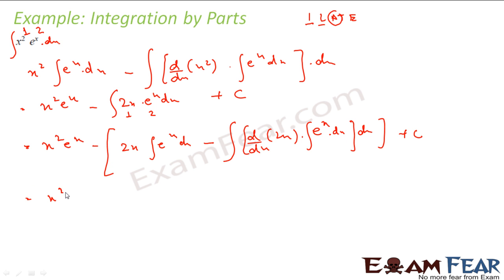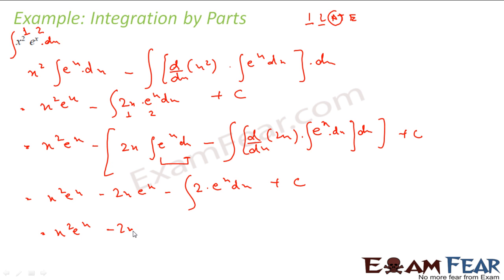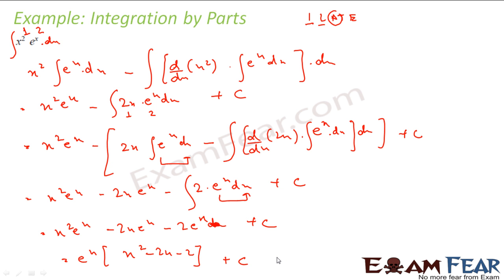This gives x²·e^x minus 2x·e^x minus 2·e^x plus constant. Taking e^x as common factor, this becomes e^x(x² minus 2x minus 2) plus constant. Very simple application of integration by parts. We applied it twice because x² reduced to x and then to a constant.